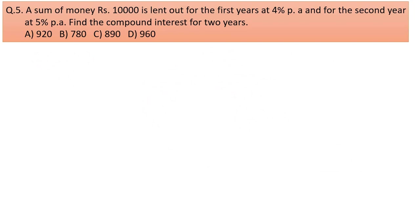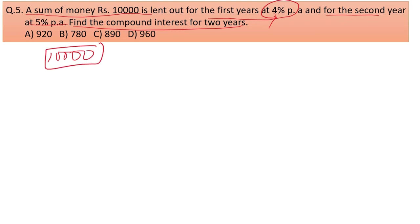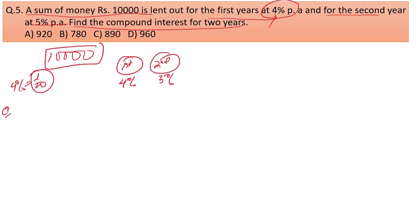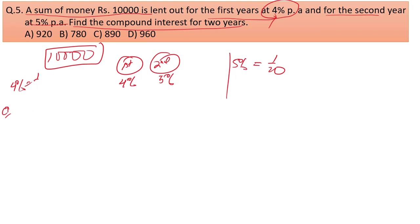The next question: a sum of rupees 10,000 is lent out at 4% per annum for the first year and 5% per annum for the second year. Find the compound interest for two years. We know 4% = 1/25, and for compound interest calculated on amount, the ratio is 26/25. For 5%, it equals 1/20.